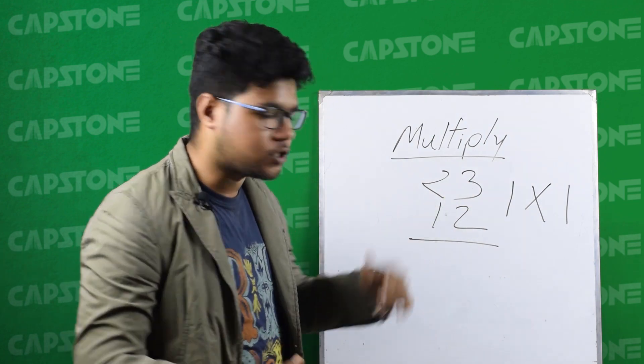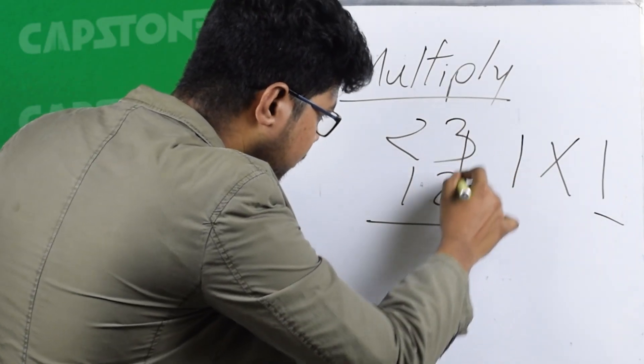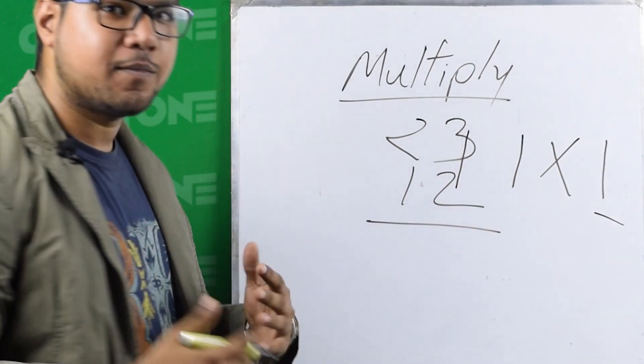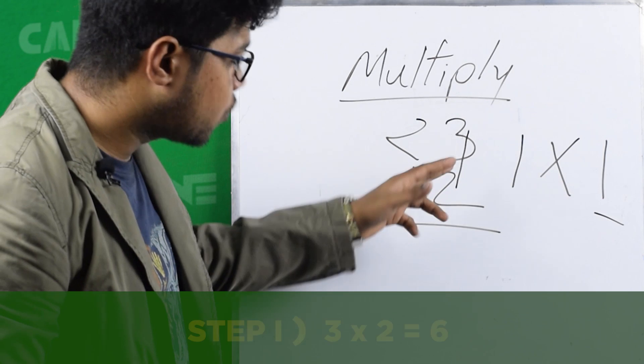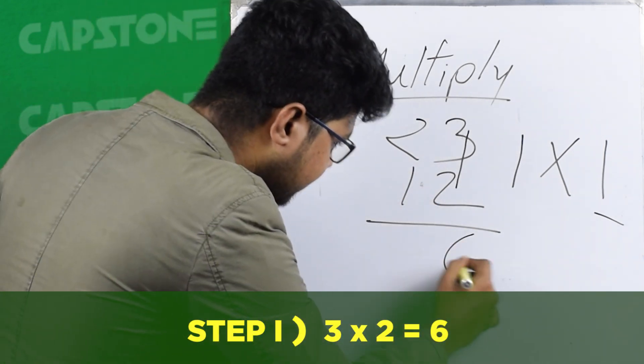First we will learn I. I is the units digit. For example, 23 multiplied by 12. So 3 into 2 is 6.